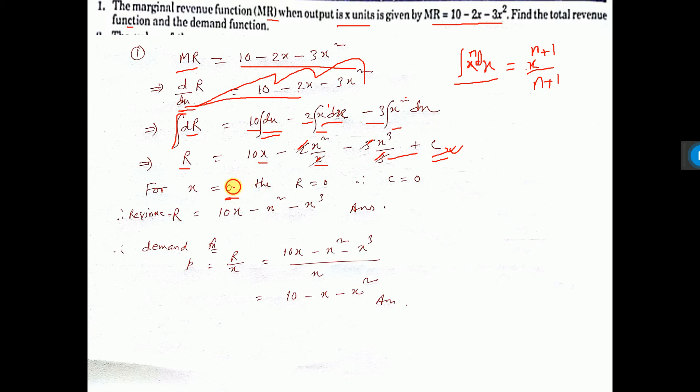Now, if you put x equal to 0 here, then here, then here, then revenue also 0, that is also you put 0. So you are getting c is equal to 0, all are 0, so c equal to 0 you are getting.